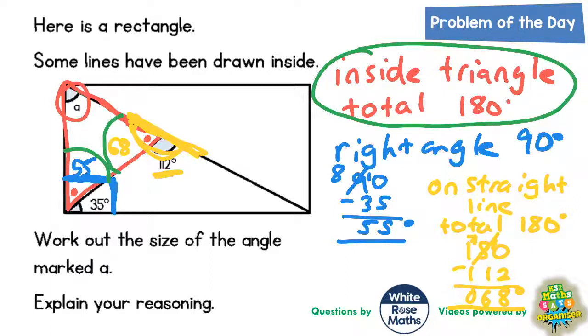So if we add those together to see what we've got so far. So 55 plus 68, what's that equal? 8 plus 5 is 13. Put the 3 in, carry the 1. 5 plus 6 is 11, plus the 1 is 12. So we've got 123 degrees so far.